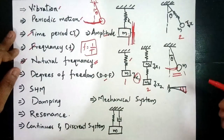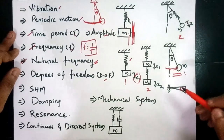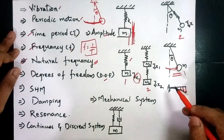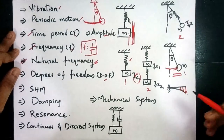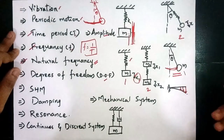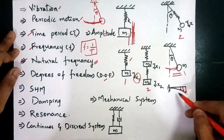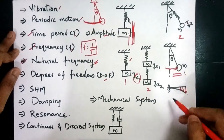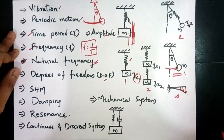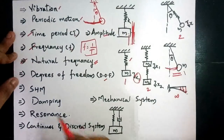For a continuous system with coordinates x1, x2, x3, x4 at an infinite number of points, there are an infinite number of deflections possible. Therefore, we can say that the degrees of freedom is infinity.